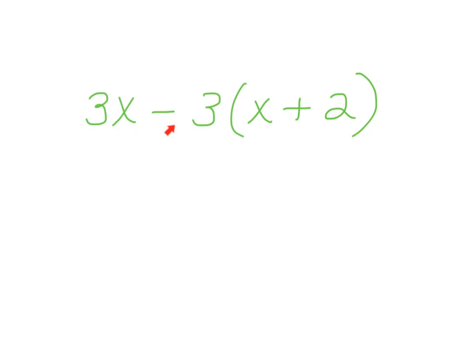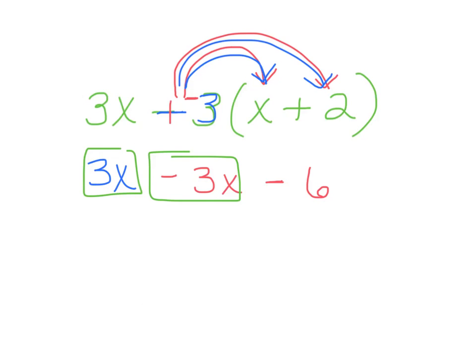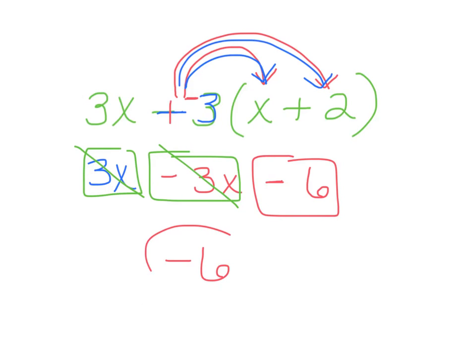Let's try another one: 3x minus 3 times (x plus 2). Keep the 3x out front. That minus sign goes with the 3 — think of it as negative 3. Distribute: negative 3 times x is negative 3x, and negative 3 times 2 is negative 6. Now combine like terms: 3x plus negative 3x is 0, so those cancel. All I have left is negative 6. My final answer is negative 6.